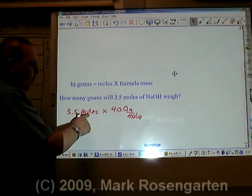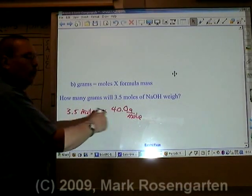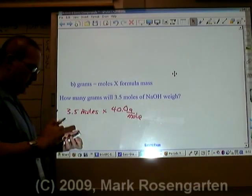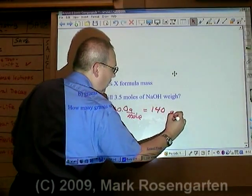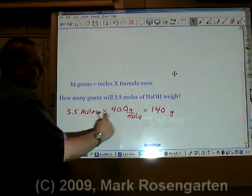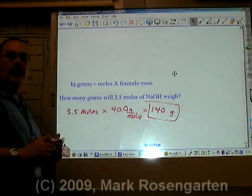MOLTIPLY. If you're given moles, MOLTIPLY. 3.5 times 40 equals 140 grams. Let's see. Two sig figs, three sig figs. We want two sig figs in our final answer, and that's how many grams.